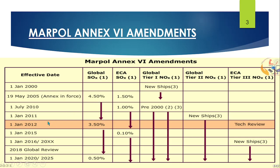The Global sulphur cap was further reduced to 3.50% from 1st January 2012. In the Emission Control Area, a new regulation adopted in 2010 reduced the sulphur percentage from 1.50% to 1%. Then, from 1st January 2015, the ECA sulphur limit was reduced further from 1% to 0.1%. The Global Sulphur Cap 2020 drastically reduced the global limit from 3.50% to 0.50%, now known as VLSFO — Very Low Sulphur Fuel Oil.